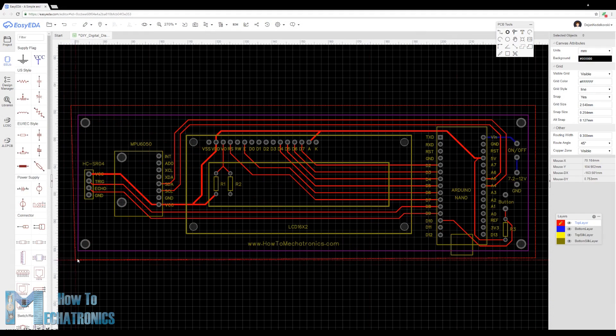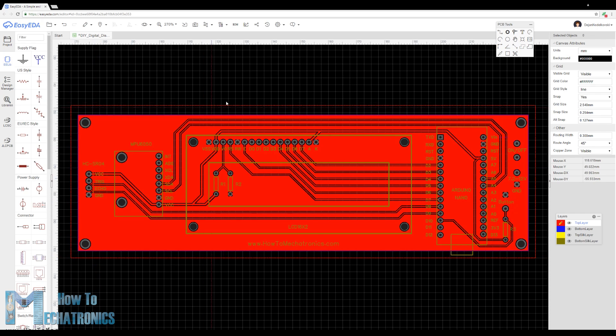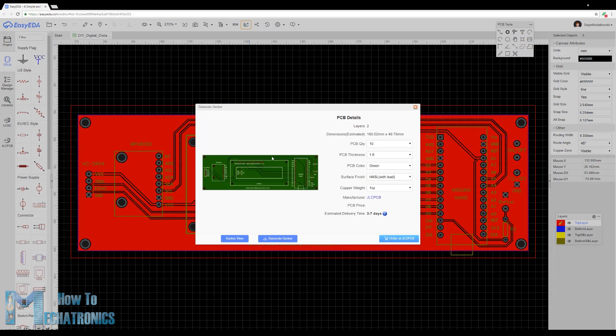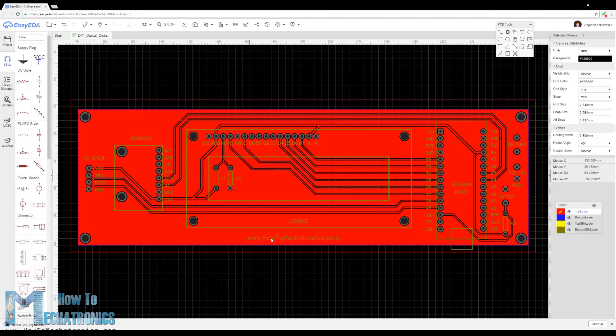According to the circuit schematic we need to design the custom PCB, and I did that using the EZ EDA free online circuit design software. Once we finish the design here, we can simply export the Gerber file which is used for manufacturing the PCB.